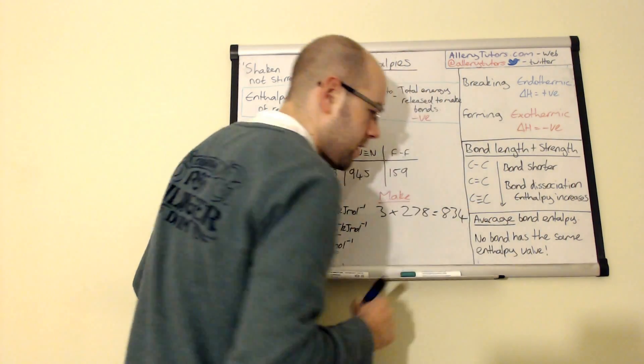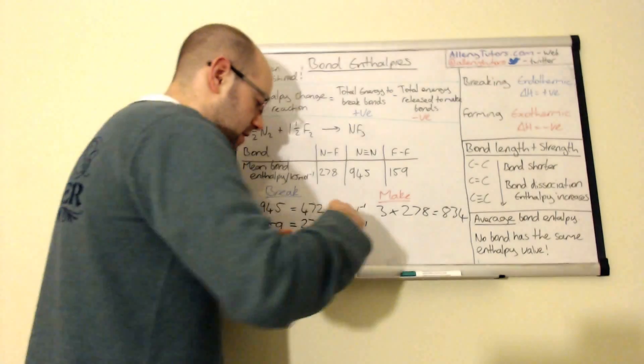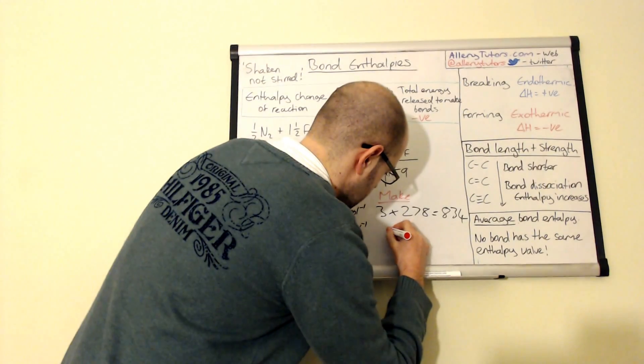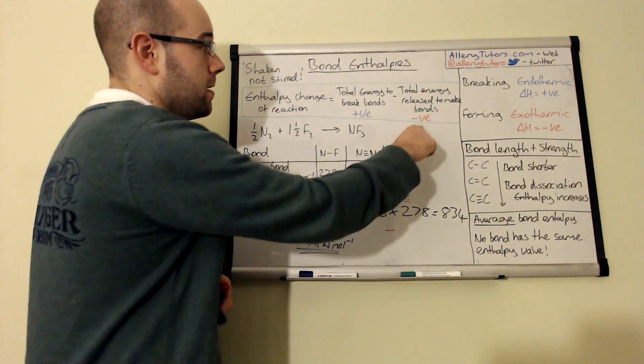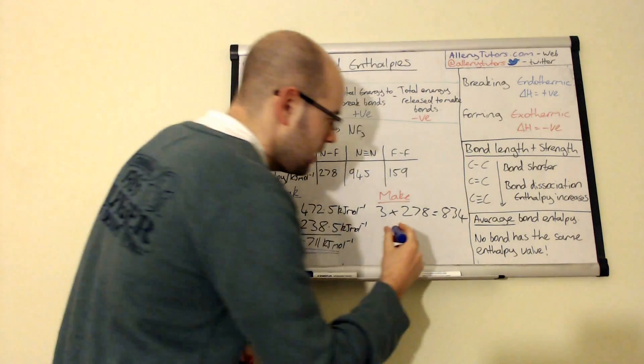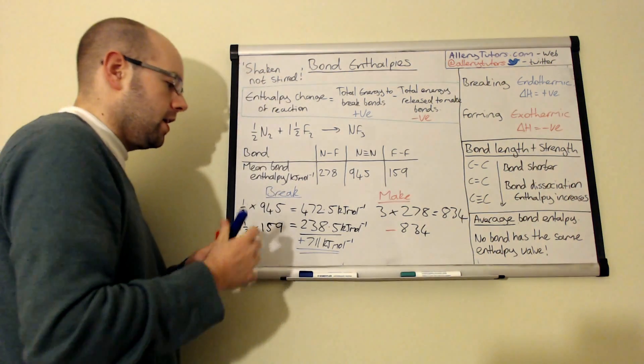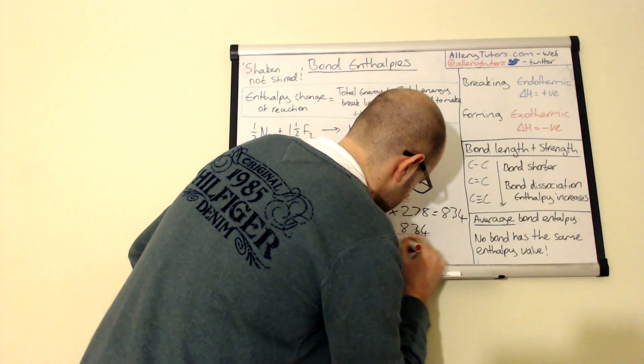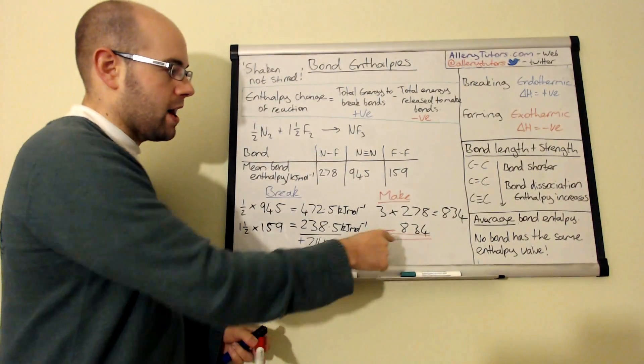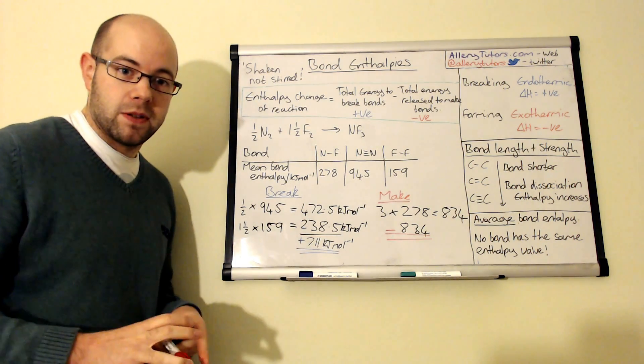And again, that would be kilojoules per mole. And because that's our final answer there, we just put minus, because this is making, and making is obviously releasing energy, 834. So I'll put that there. And then you can see that actually, straight away, that we actually get more energy given out when we're making them than actually the energy we need to put in to break them in the first place.